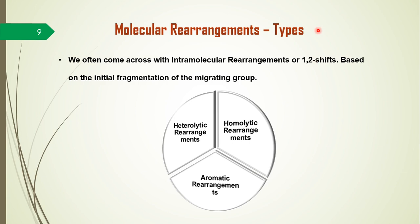There are different types of molecular rearrangements. Generally, almost all reactions undergo intramolecular rearrangements or 1,2-shifts based on the initial fragmentation of the migrating group. These molecular rearrangements are of three different types: heterolytic rearrangements, homolytic rearrangements, and aromatic rearrangements.